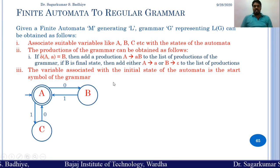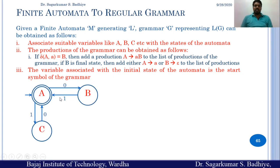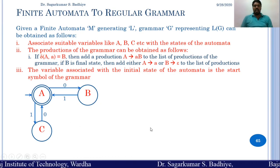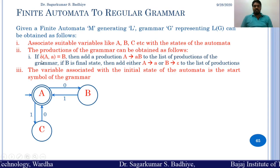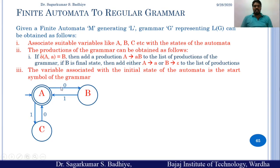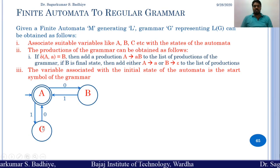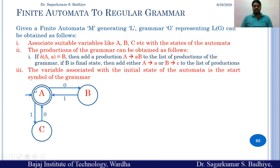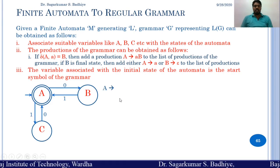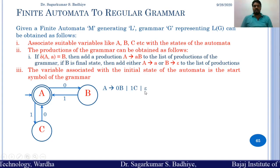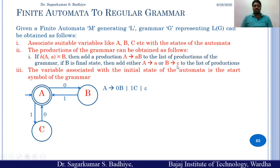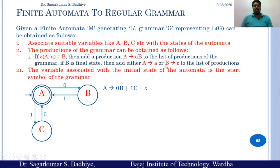Consider the example: suppose this is the given finite automata and we have to convert it to the grammar. We have a transition delta(A, 0) goes to B, so we add a production A derives to 0B. And from A on 1 it goes to C, so delta(A, 1) goes to C, and we add a production A derives to 1C. Since A is also a final state, we can add A derives to epsilon.